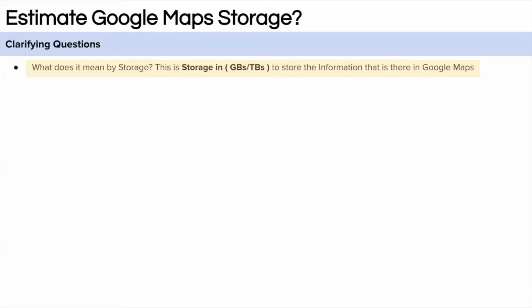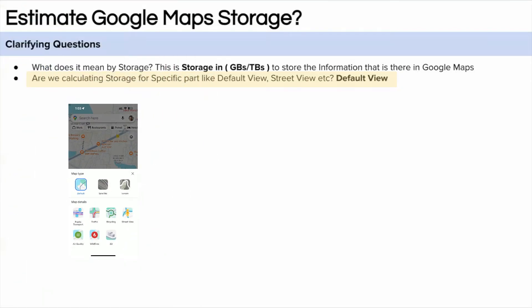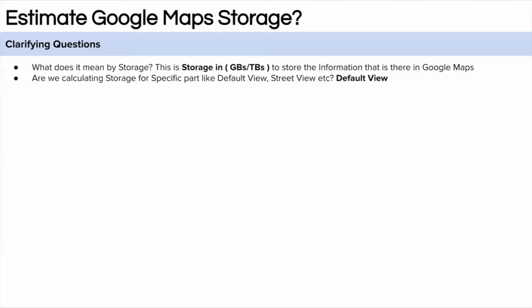The first question we need to clarify is about the storage — what does it mean by storage? By storage, we need to calculate the GBs or TBs of data or information which Google Maps needs to store at the backend. The second question: since Google Maps has so many views — a default view, terrain view, satellite view, or street view — is there any particular view we want to consider here, or are we not bounded by this?